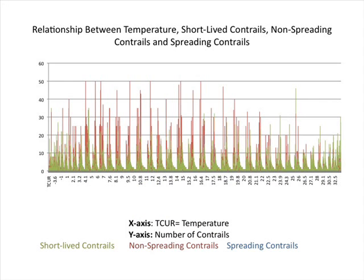The relationship between temperature, short-lived contrails, non-spreading contrails, and spreading contrails is shown in this graph. The x-axis is the current temperature and the y-axis is the number of contrails. The graph indicates a wide variety of different bar heights. The green represents short-lived contrails, the red represents non-spreading contrails, and the blue represents spreading contrails.